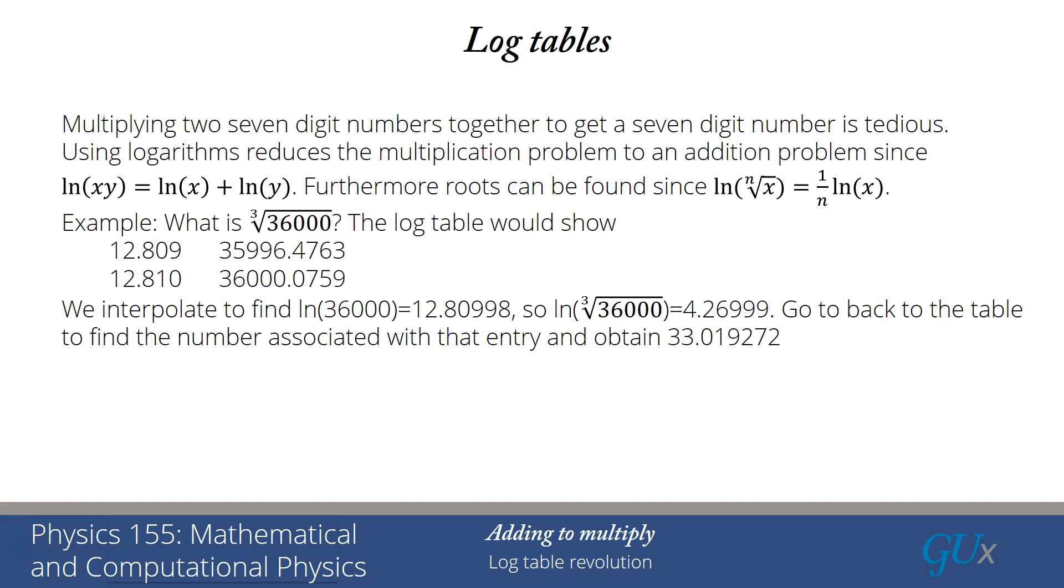And so then the cube root of 36,000, the logarithm of it, would be that number divided by 3, which would be 4.26999. Now I've got to go back to my table and find the 4,269.99 step. I'm going to use interpolation again. And find the number that's associated with that entry, and I find it's equal to 33.019272.